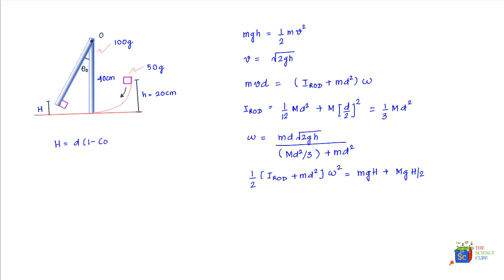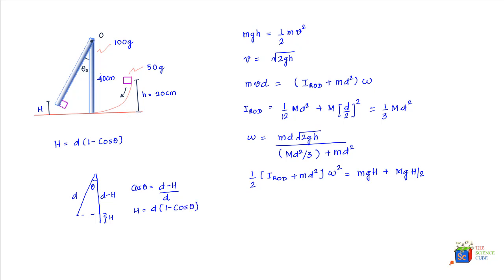Here's a quick derivation: at its highest point, if the rod has risen a height h, then d minus h is the remaining vertical component. With angle theta and hypotenuse d, cos θ equals (d − h)/d, giving h = d·(1 − cos θ). Substituting this for h and (1/3)Md² for I_rod, and plugging in all known values, we find theta equals 32 degrees.